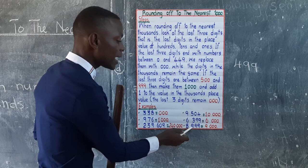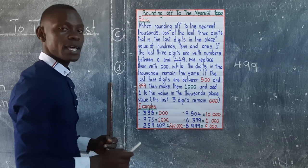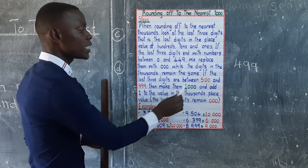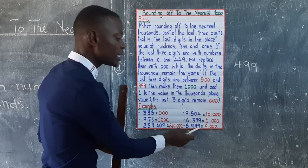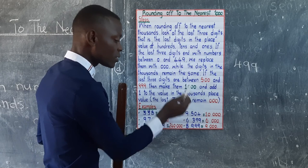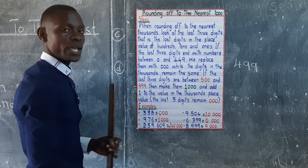The last example is 8,999. We focus on the last three digits: 999. Numbers between 500 to 999 have a value of 1,000. So the last three digits become 000, and we add 1 to 8, giving 9,000.